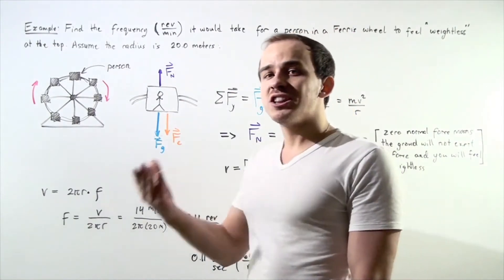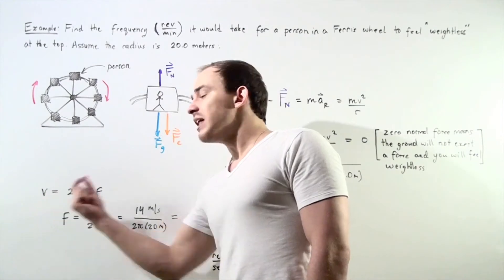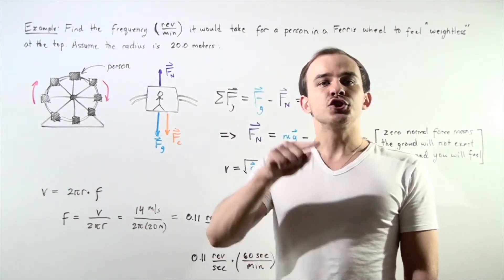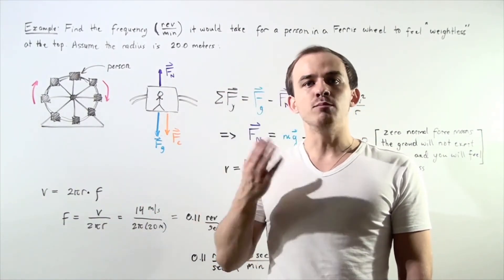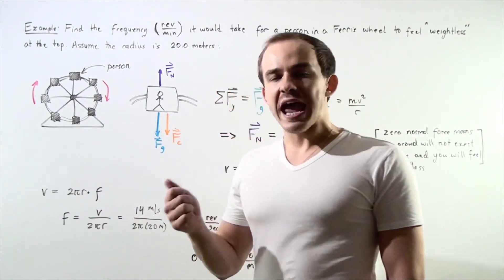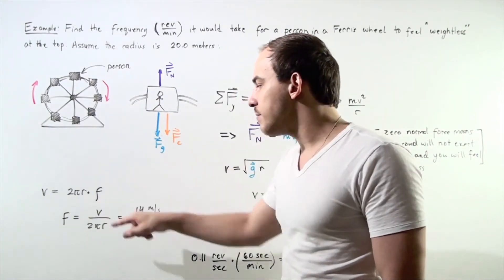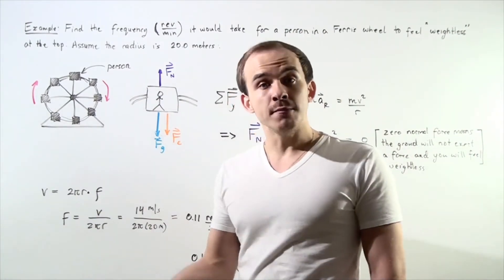Now let's recall what the relationship is between velocity and frequency. Velocity equals the circumference of our circle multiplied by the frequency. We can solve for frequency and get the frequency equals velocity divided by 2πr, our circumference.